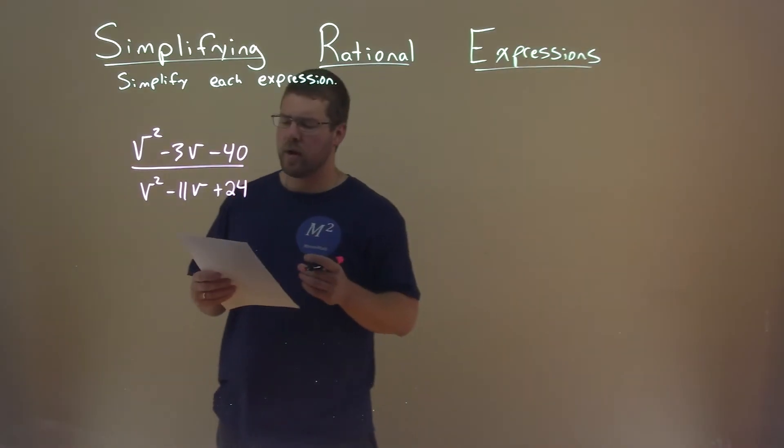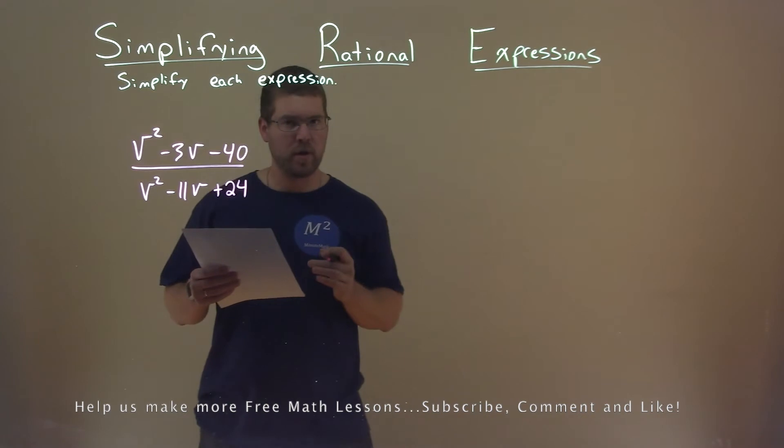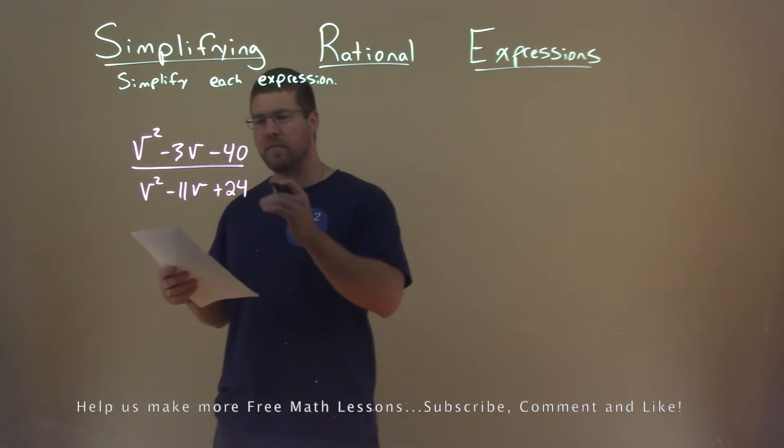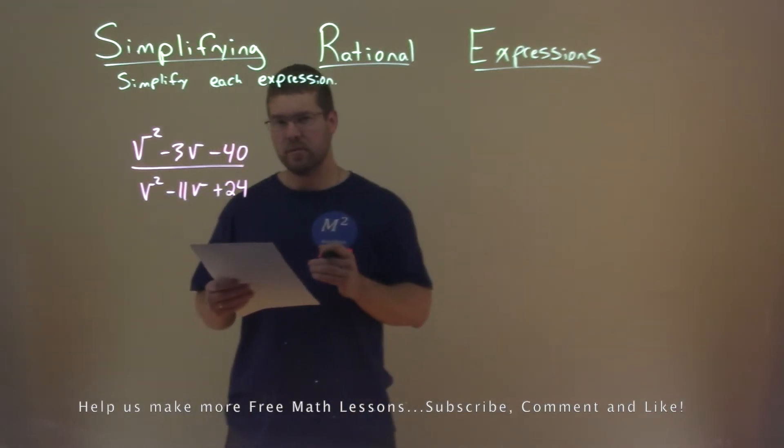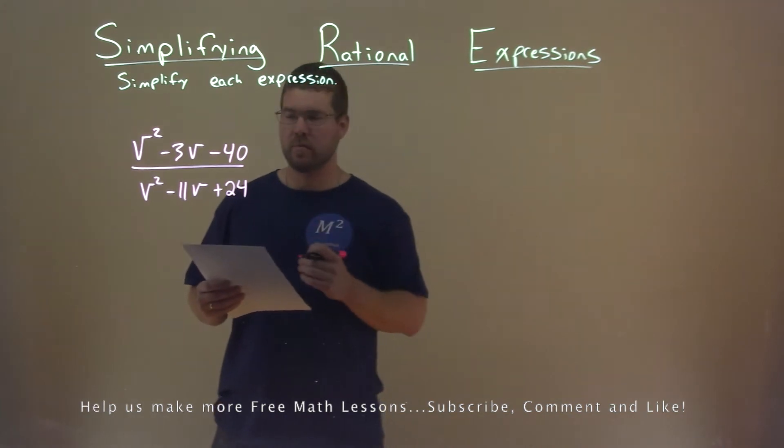We're given this problem right here: v squared minus 3v minus 40 over v squared minus 11v plus 24, and we're going to simplify this expression.